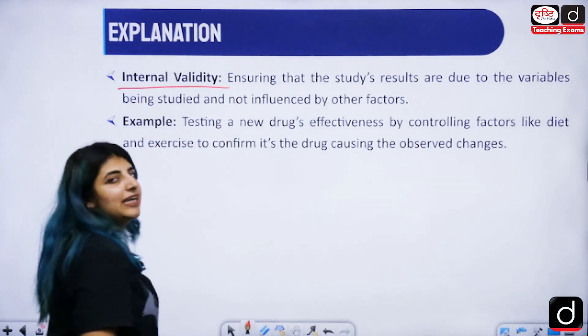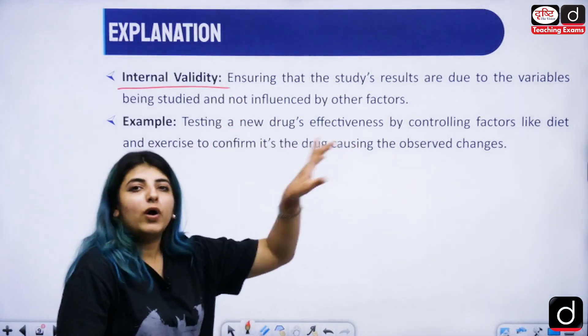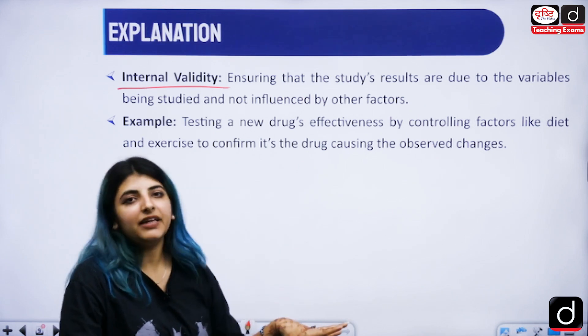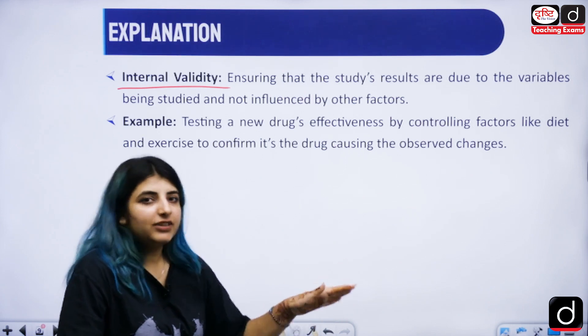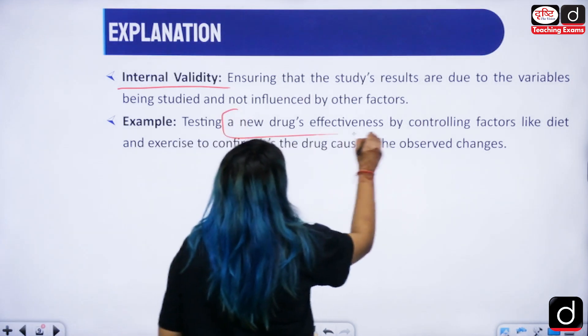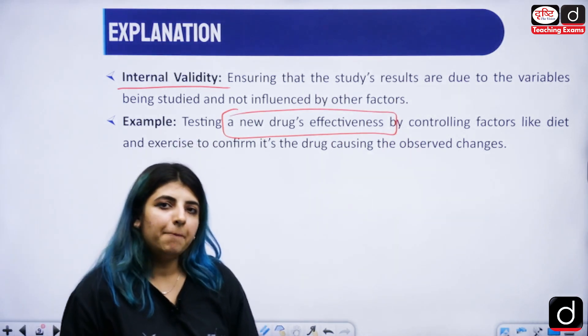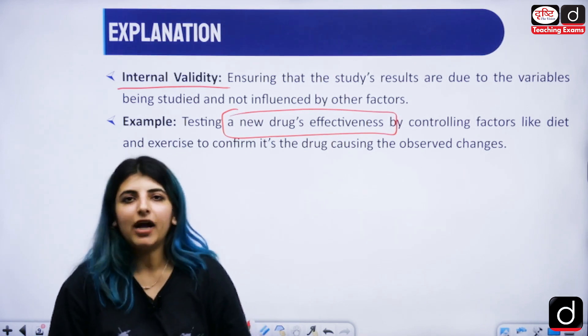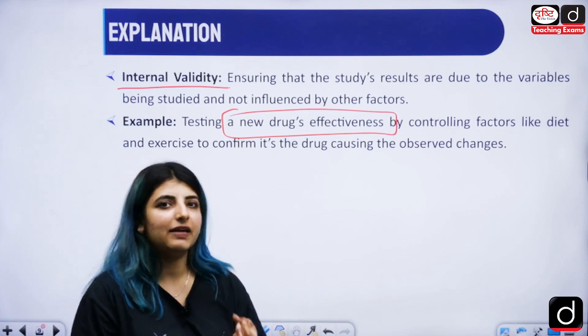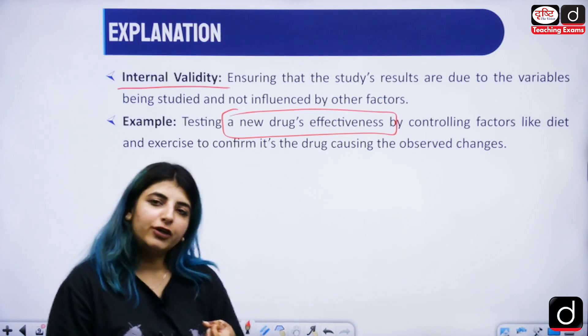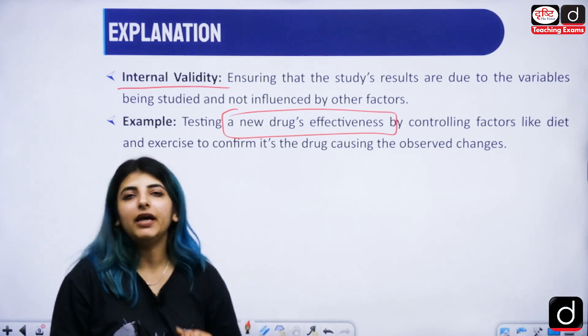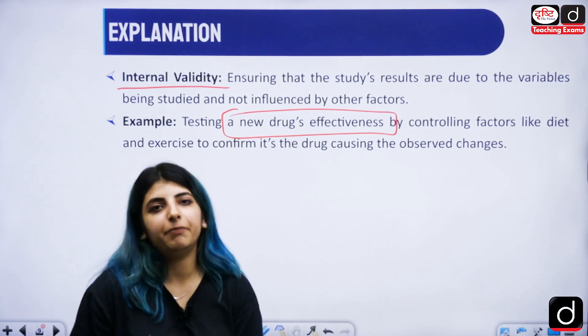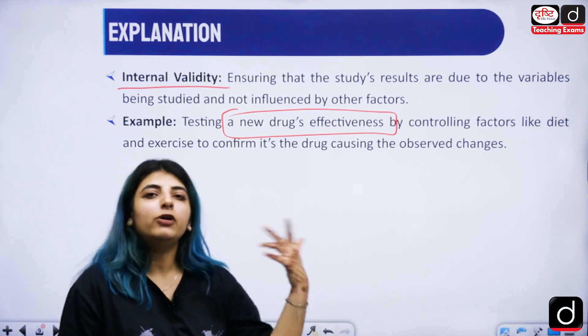Then we have internal validity. Internal validity refers to ensuring that the study's results are due to the variables being studied and not influenced by other factors. Let's say if we try to talk about a new drug, a new medicine, and we want to check its effectiveness but I want my patients to take the same diet that they usually take, exercise as much they do in their daily lives. These factors will be controlled by me as a doctor. The only factor that will be changed, manipulated would be the medicine because I want to see how the medicine is affecting the patient positively or negatively.